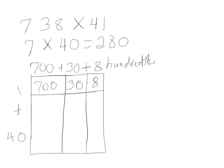In our next row down we have 40 times 8, which would be 320, and 40 times 30 is 1,200, and 700 times 40 is 28,000.